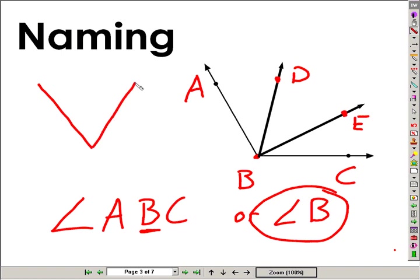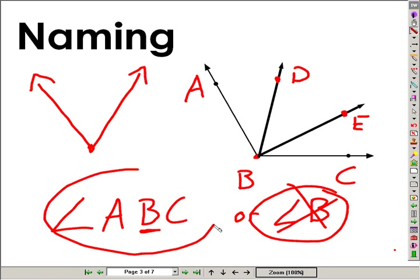So again, if there's only one angle at this vertex, then a single letter name is appropriate. Several angles at that corner, then this is inappropriate. And then we'd have to go back to the three-letter name, like ABC or angle ABD, and the list goes on and on: A, B, D, and so forth.